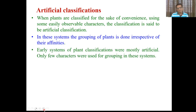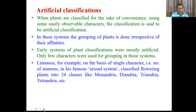Early systems of plant classifications were mostly artificial. Only few characters were considered for grouping. There is one famous system given by Linnaeus, the father of taxonomy. On the basis of a single character - the number of stamens - he gave a system. His system is named the sexual system, because he considers the androecium, the number of stamens.